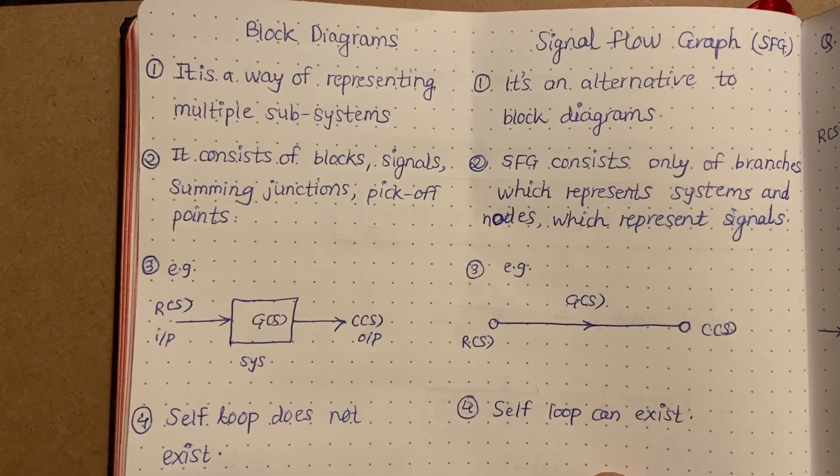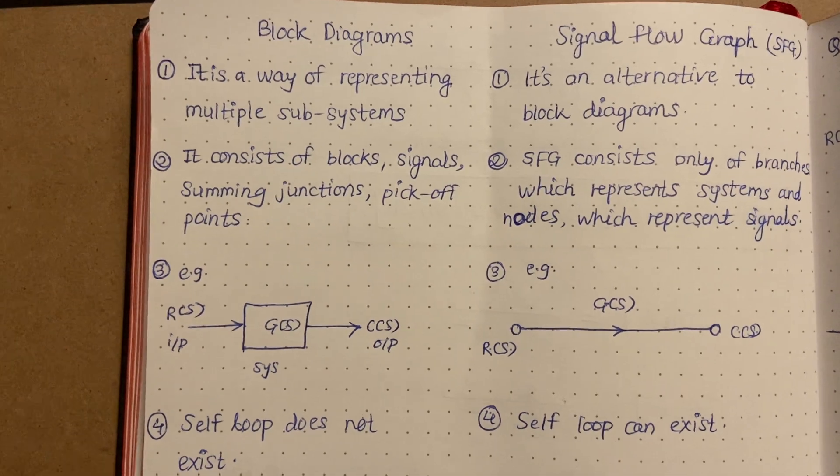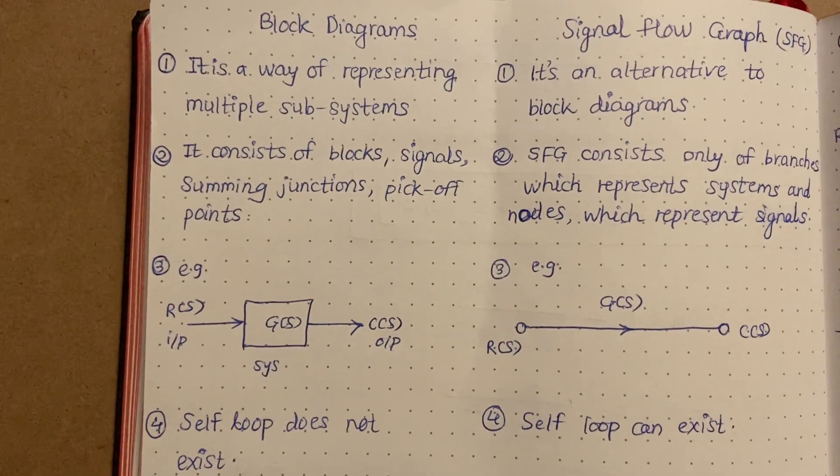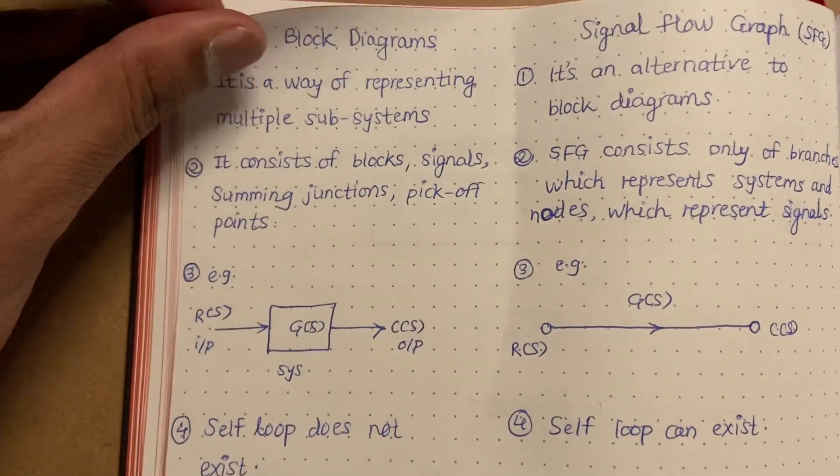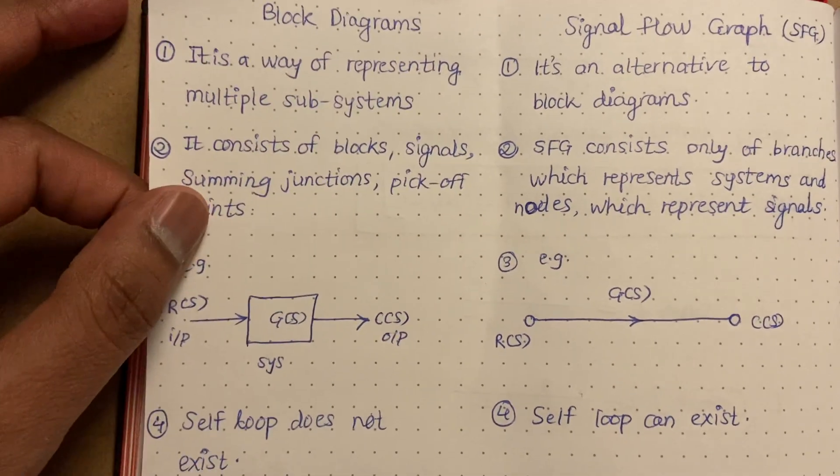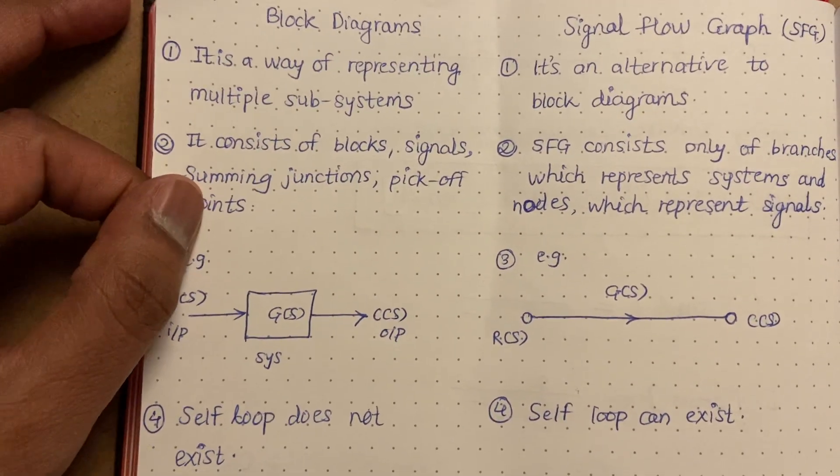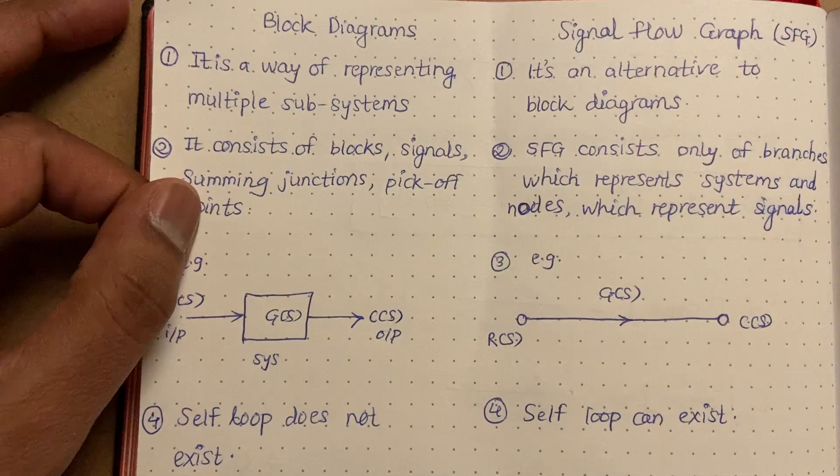So these are the few differences or differentiating factors or comparison points between block diagram and signal flow graph. I will show you one more example, like how does a block diagram look like and how does signal flow graph look like.